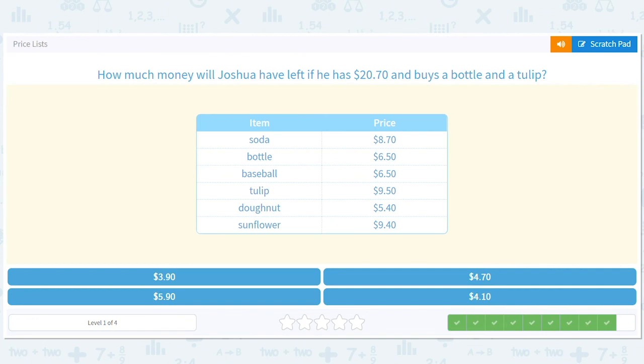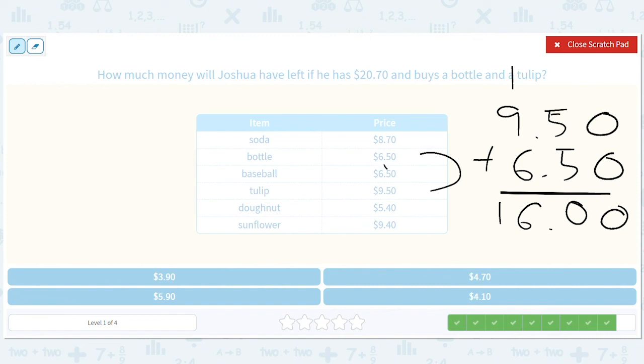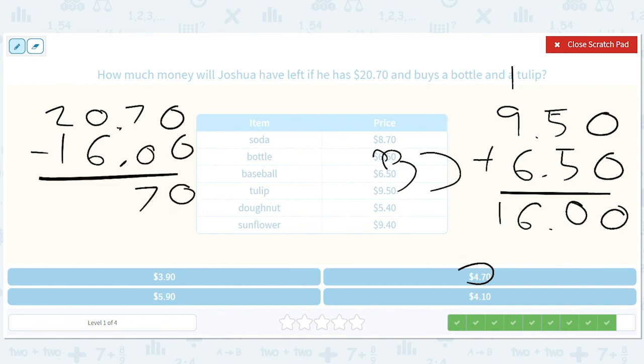How much money will Joshua have left if he has twenty dollars seventy cents and buys a bottle and a tulip? These kids really like flowers. This is going to be nine fifty plus six fifty. Let's give us a nice round number because those fifties are going to combine, give us a dollar. It was ten here, put a one up here, it'll give us sixteen bucks. And you can kind of tell that we shave this fifty off, you put it here, you get ten dollars, you have an extra six, you have sixteen dollars. And you need to get to twenty seventy, so it's seventy cents more than twenty, so it's four dollars and seventy cents. If you want to write it out you could do 20.70 minus sixteen, put the dot there, zero, zero, zero, zero, seven. Put the ten there, make that a one, that gives you a four, and then one minus one is zero, so you get four seventy.